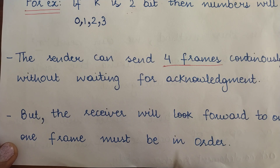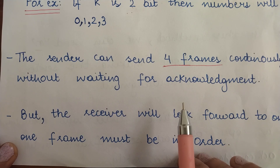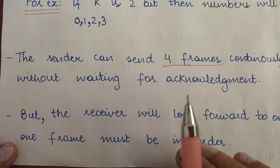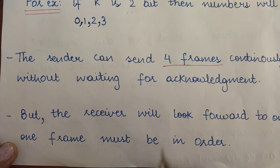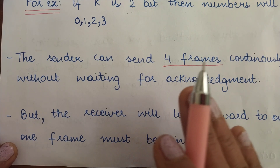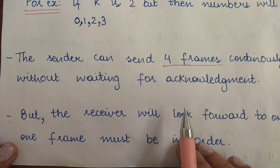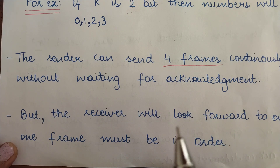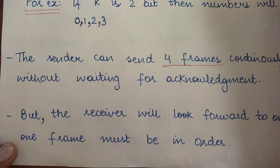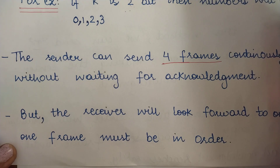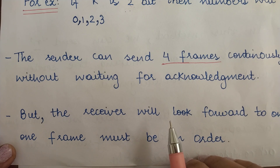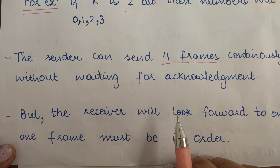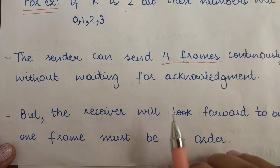If frames are not received in the proper order in which they were transmitted, they are called out-of-order. For example, if frame number 1 was received first and then frame number 3 was received, though frame number 2 must have been received before frame number 3 — that is out-of-order delivery. When all frames arrive in the same order in which they were transmitted, it is called in-order delivery.